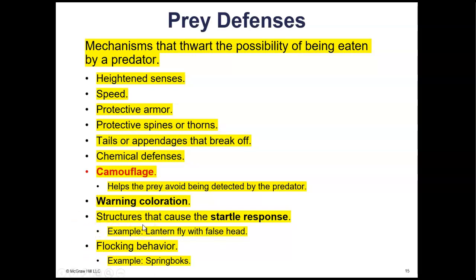Warning coloration features bright colors that warn predators of potential toxicity. Some mimics display warning coloration even though they're not poisonous, but because they resemble a species that is, it still fools the predator. Some prey have structures that cause a startle response — for example a lanternfly with a false head that makes it appear larger. Flocking behavior is another defense, where a group protects each other, as seen in grazing animals and birds.